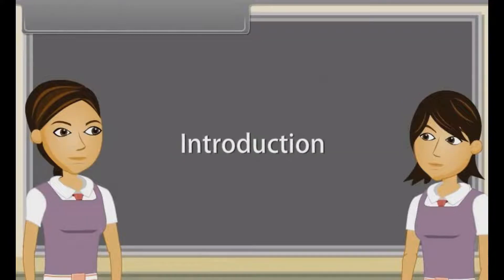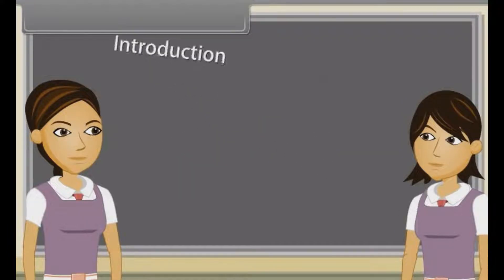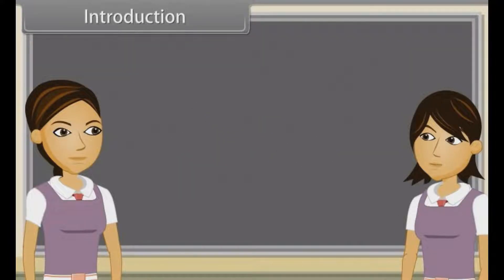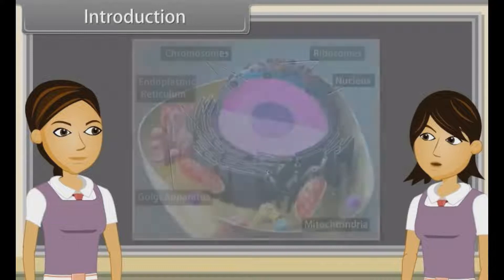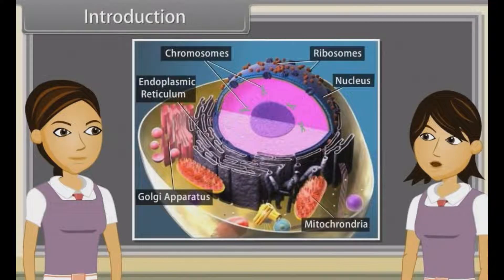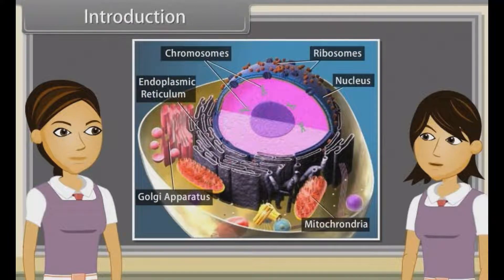Hey Ankita, we have discussed the structure of the endomembrane system, endoplasmic reticulum, Golgi apparatus, lysosomes, vacuoles, mitochondria, plastids and ribosomes.